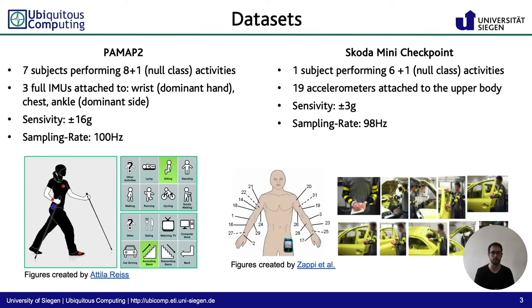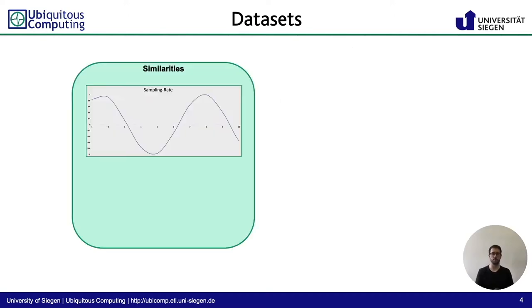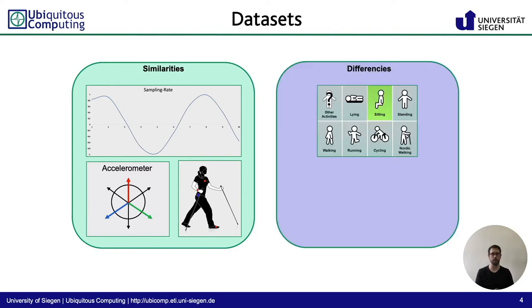To execute our experiments, we chose the PALMAP2 and the SCOTA Mini Checkpoint dataset. Both datasets are well known in the research community and it is already proven that they are suitable for deep learning applications. These two datasets share important attributes, like a nearly identical sampling frequency, similar sensors, and similar recording locations on the body. However, they are fundamentally different regarding the activity classes: the PALMAP2 dataset contains activities of daily living, whereas the SCOTA Mini Checkpoint dataset contains activities from the assembly line of a car manufacturing process.